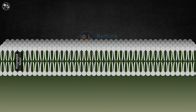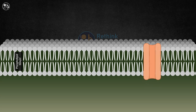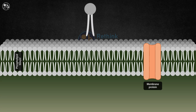The cell membrane is made up of a phospholipid bilayer with embedded proteins. The phospholipids have a hydrophilic head and hydrophobic tail, which creates a barrier that separates the inside and outside of the cell.